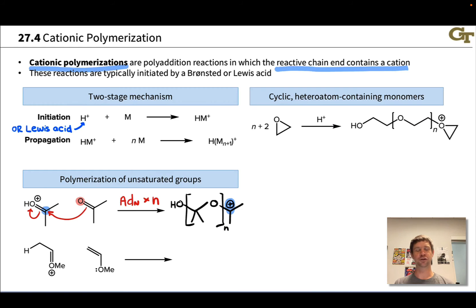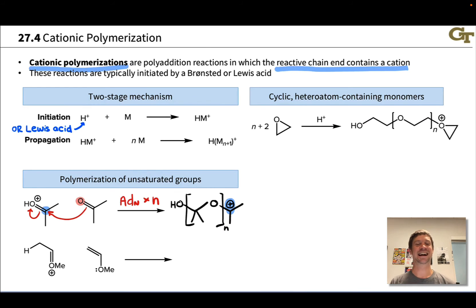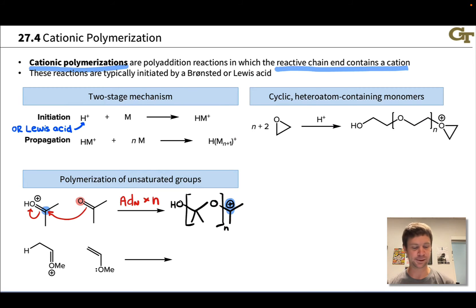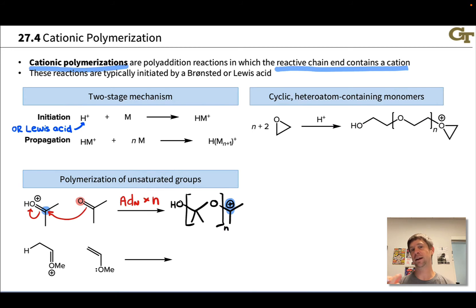If you want to lengthen the chain, all you have to do is add more monomer, and the reaction mixture will consume that monomer because there's always a little of this reactive cation around. This can also be imagined for carbon–carbon double bonds, and is very typical of activated, electron-rich alkenes that have an electron-donating group connected to one of the two carbons.